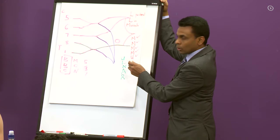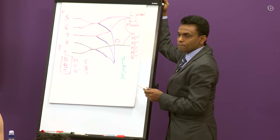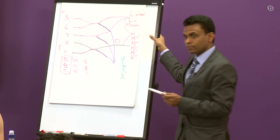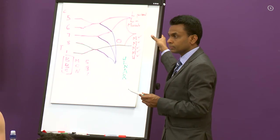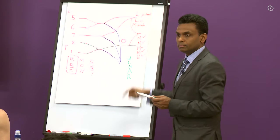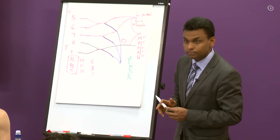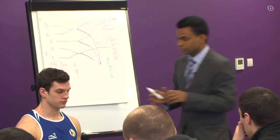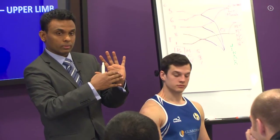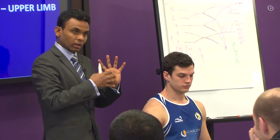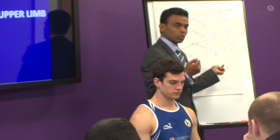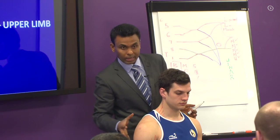Upper subscapular nerve — what is its supply? The subscapularis muscle. So imagine your scapula: the inside surface is the subscapularis, and both the upper and lower subscapular nerves supply the subscapularis. The nerve to latissimus dorsi, also called the thoracodorsal nerve, as the name says, supplies the latissimus dorsi — again, a posterior muscle.